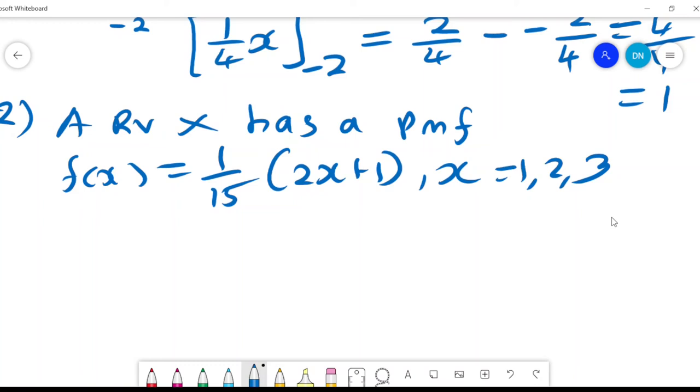We can write the f(X) in full. When X is 1, it will be 3 over 15; when X is 2, it will be 5 over 15.